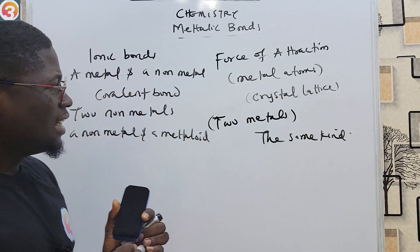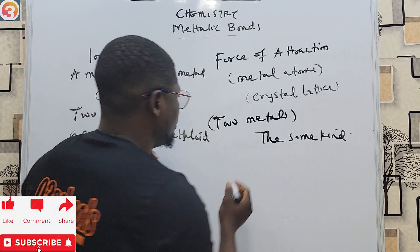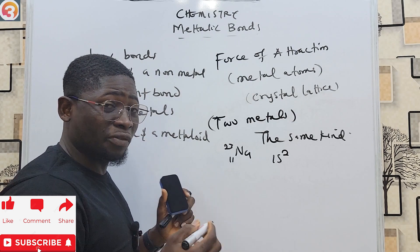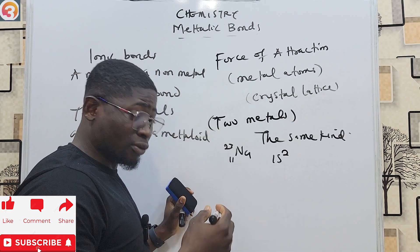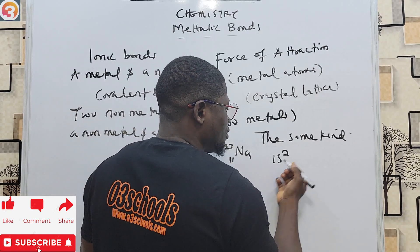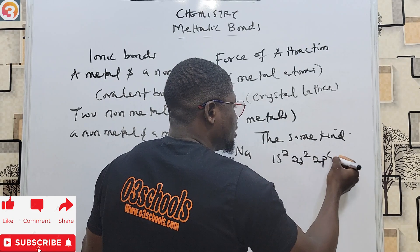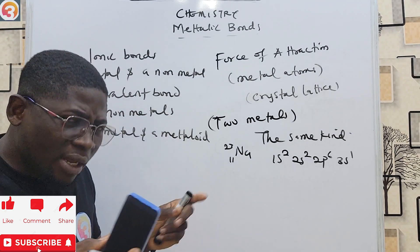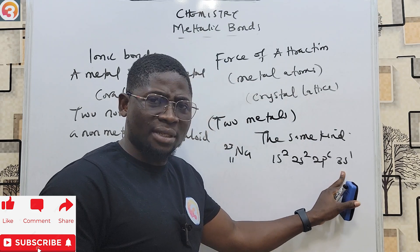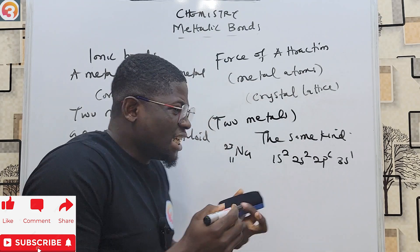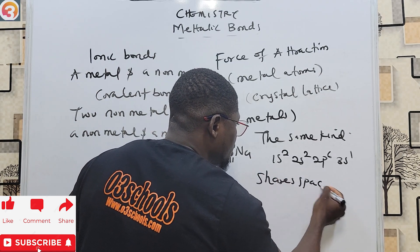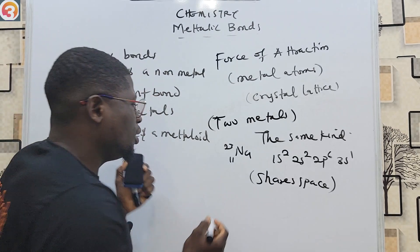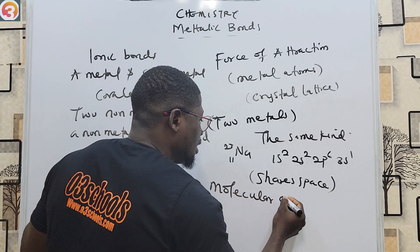Let's look at the electronic configuration of sodium. Sodium (Na), atomic number 11, has configuration 1s² 2s² 2p⁶ 3s¹. If you have not learned electronic configuration, please go back to the previous episode on that topic. Now when sodium atoms come together, the electron in the 3s orbital of one sodium atom shares space with a corresponding electron in a neighboring atom to form a molecular orbital.